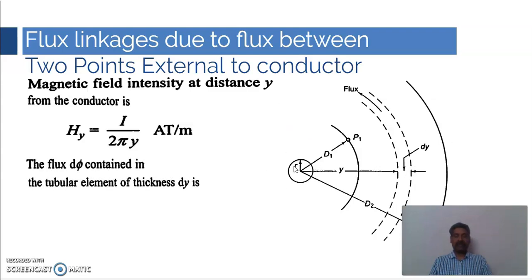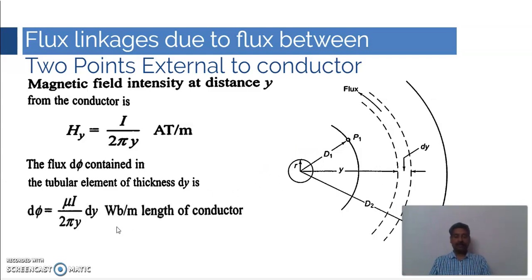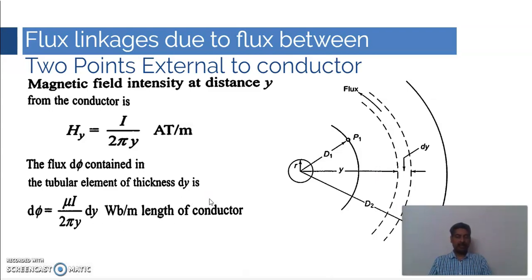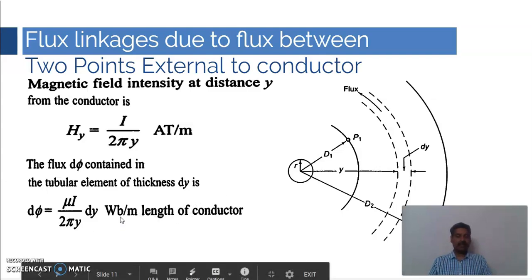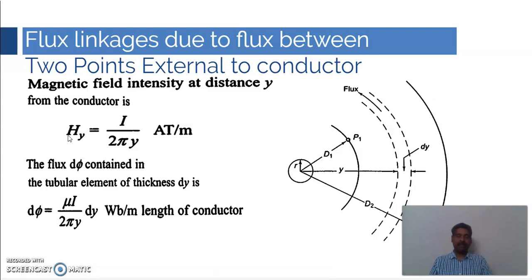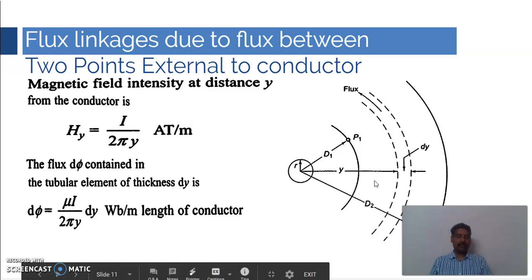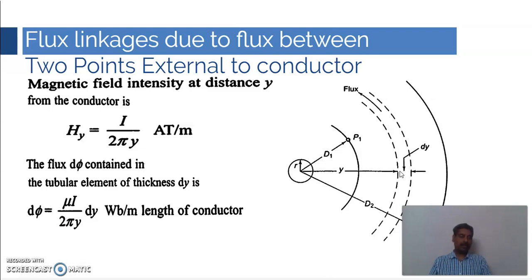The flux dΦ contained in the tubular column of thickness dy can be written using the relation dΦ = flux density × dy. Substituting flux density as μ × H_y, this equation becomes dΦ = μI / (2πy) × dy. This is the expression for flux dΦ existing in this tubular thickness dy.